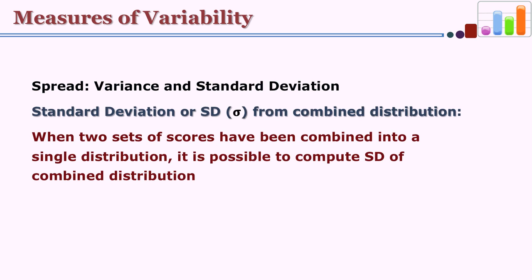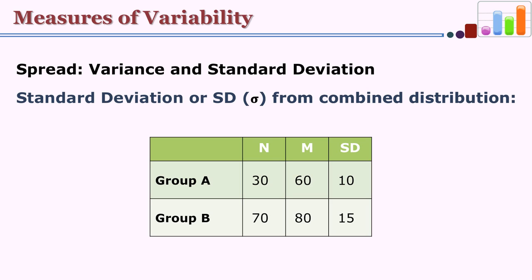Sometimes you may have two different sets of distribution each with their own mean and standard deviation, and you want to find out the combined mean and combined standard deviation. For example, Group A has 30 participants with mean 60 and SD 10; Group B has 70 participants with mean 80 and SD 15. These are two different sets from the same class, and now we want to find out the combined SD for both distributions put together.